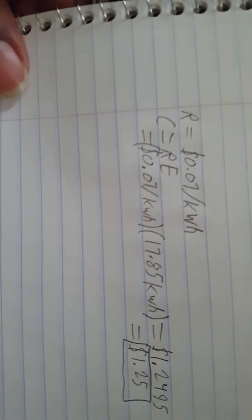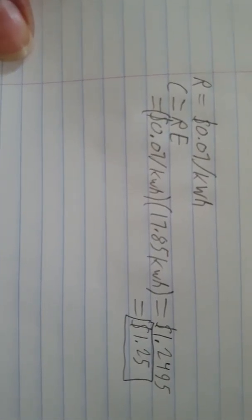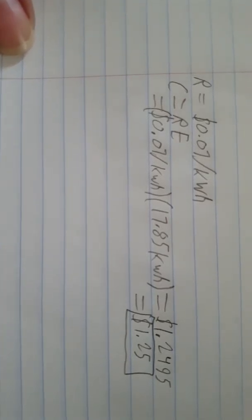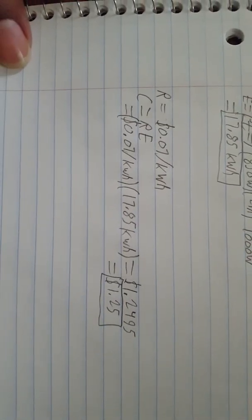So that's how much it will cost to operate this object at 7 cents per kilowatt per hour for 21 hours. And that's problem 7.